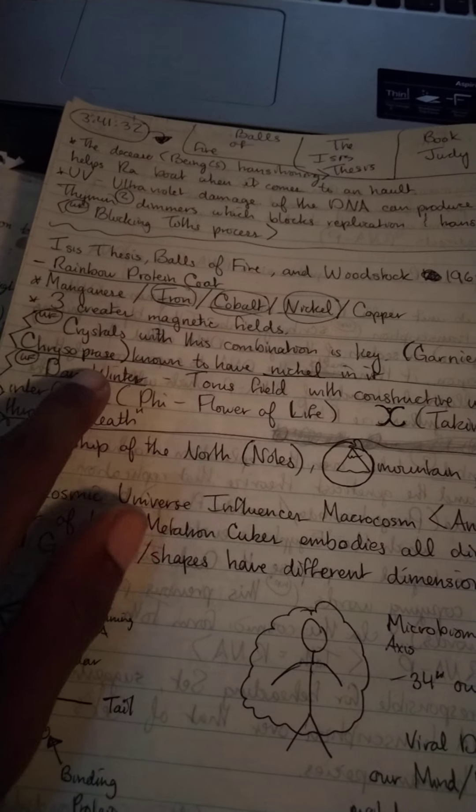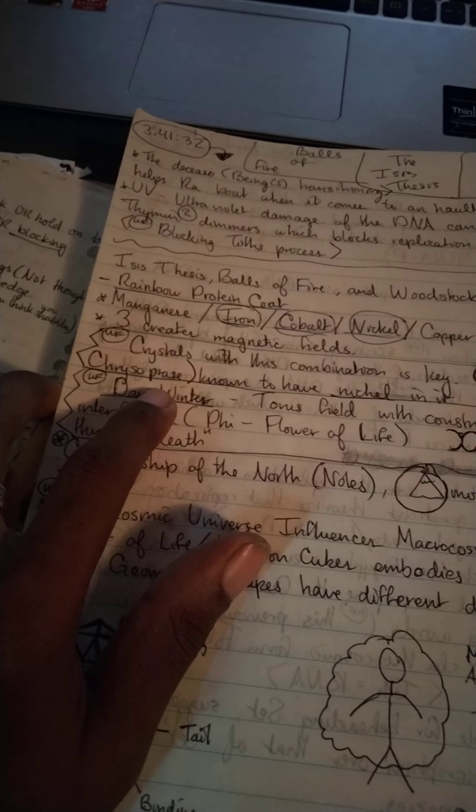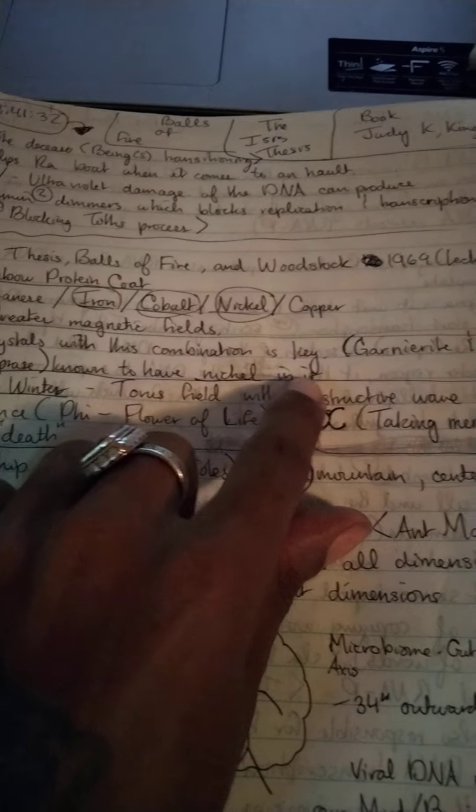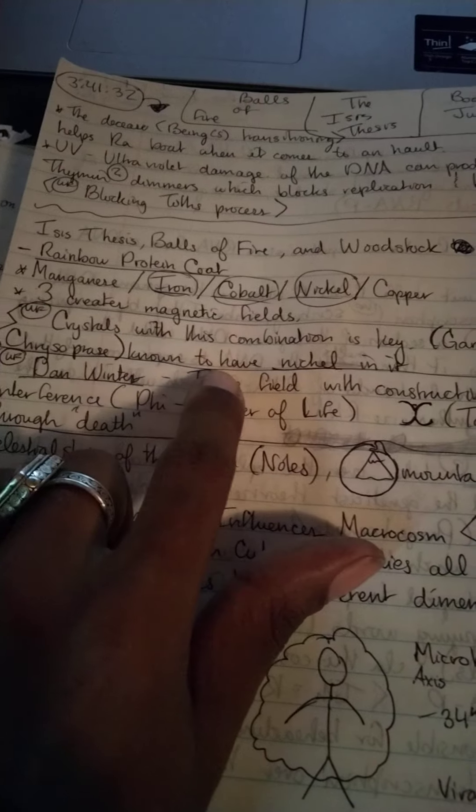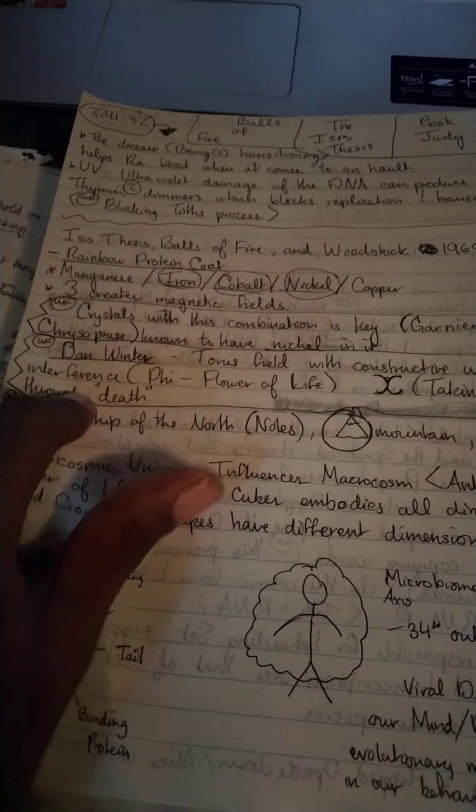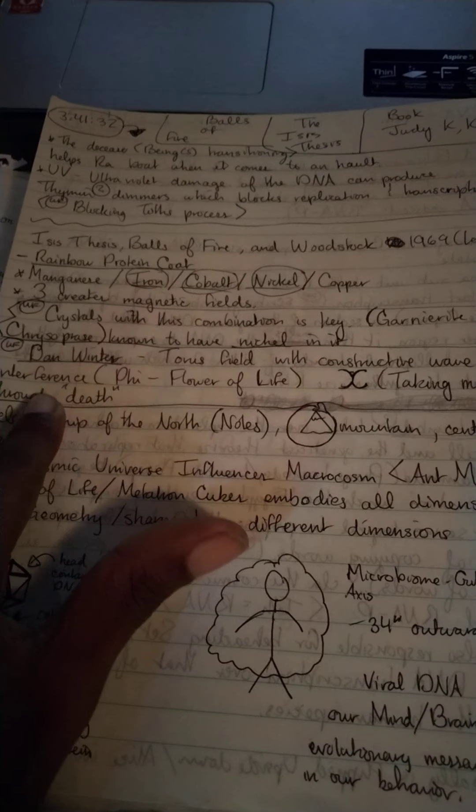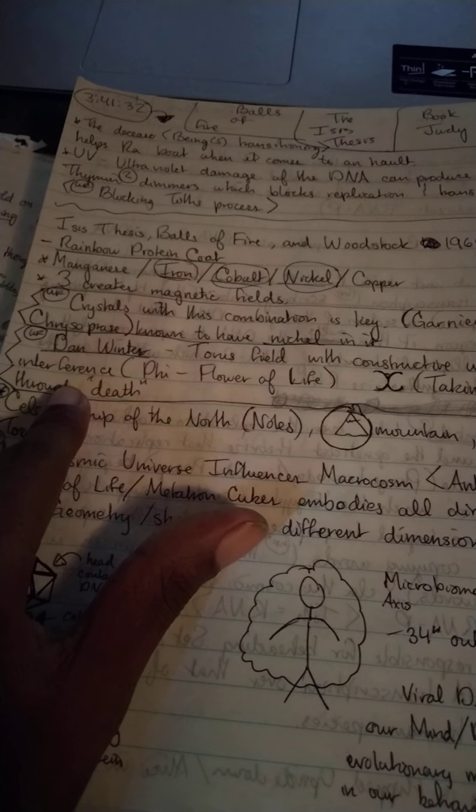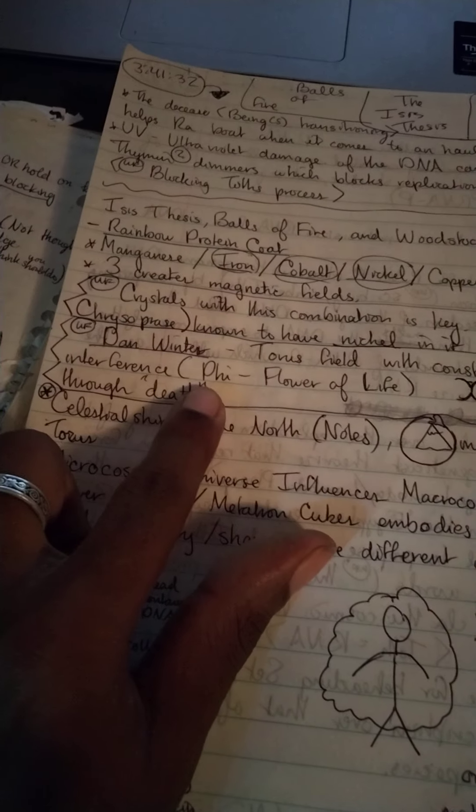I think of the crystals known to have this combination - garnierite and chrysoprase with the nickel in it. The how to die was about having to tap in and get our DNA to a certain level, so when we transition we could maneuver fully.